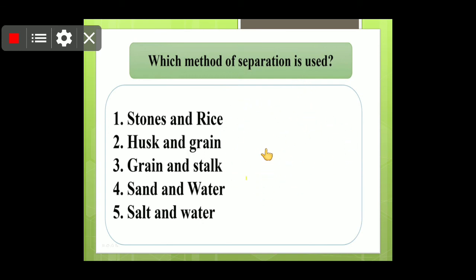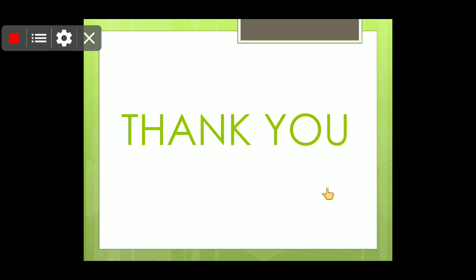Now there is a very interesting question to test your understanding of this chapter, since the chapter is now complete. The question asks which method of separation is used to separate: stones and rice, husk and grain, scent and water, and salt and water. You have to do this in your test copy or revision copy. I will check these questions and may also ask them orally during the Zoom class. Hope you all have understood the chapter well — any doubts will be cleared. Thank you for listening. Study well!